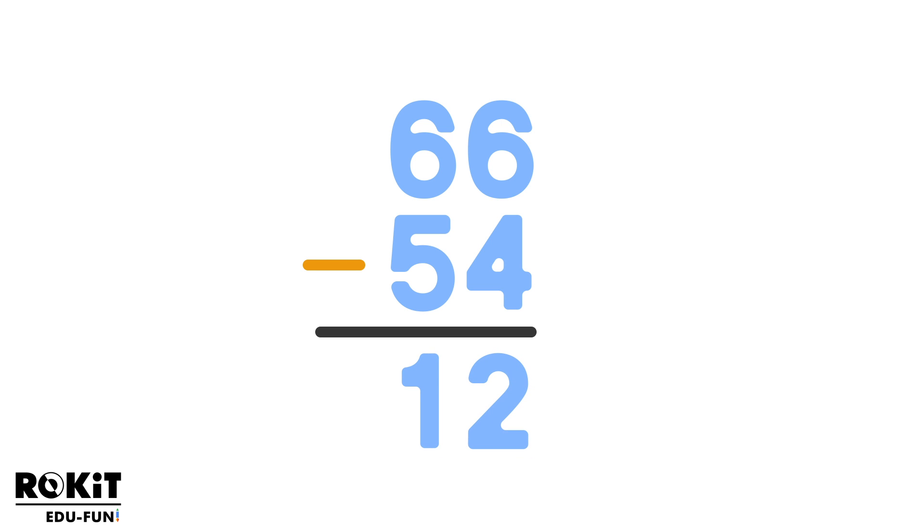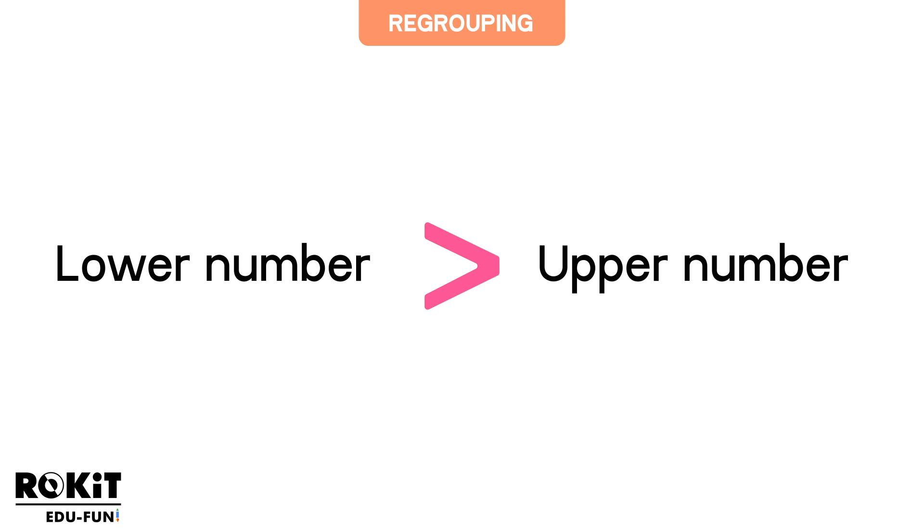Now let's learn double-digit subtraction with regrouping. This happens when we subtract, but the lower number is higher than the top number. Let's look at this example: 23 minus 17.